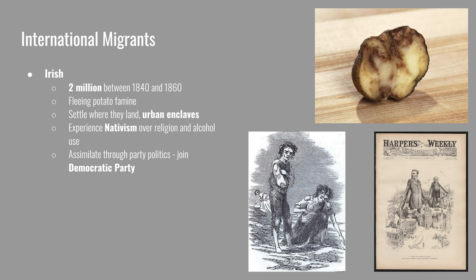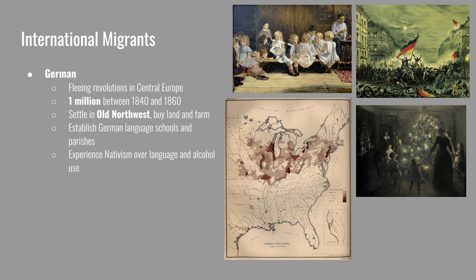The Germans fled revolutions in Central Europe happening in 1848. Between 1840 and 1860, one million of them came to the United States. As seen on the map, they spread out a lot more across the Northwest. They came with more money, so they were able to purchase land in the Old Northwest. Their primary economic activity was farming. They established German language schools and German Catholic parishes to continue practicing their traditional culture. In areas of the modern-day Midwest, like Wisconsin, there is still a very big German influence in food and drink.